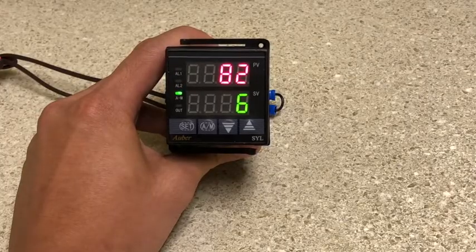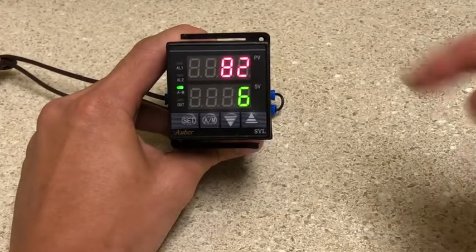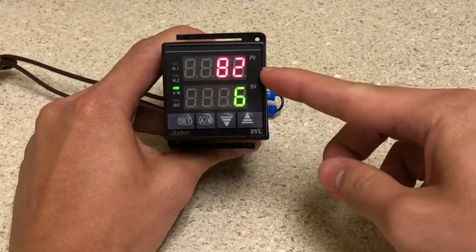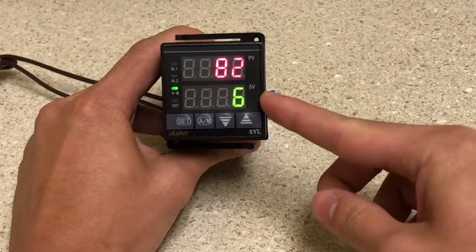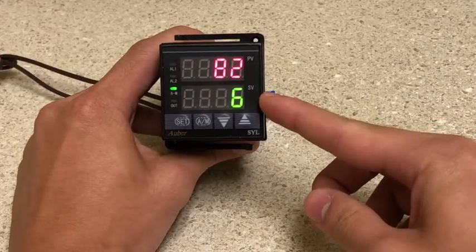So now I'm just going to briefly introduce our display. Here we have our PV or process value and it will display the sensor readout. We have our SV or set value which displays set temperature for the current running step or power output percentage.